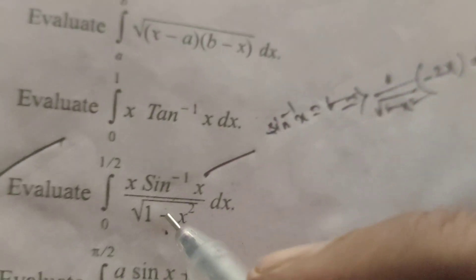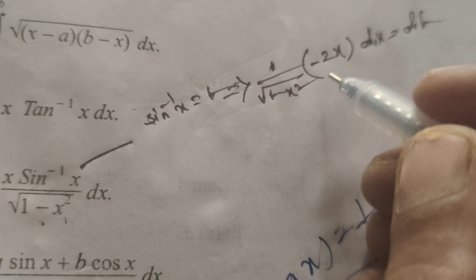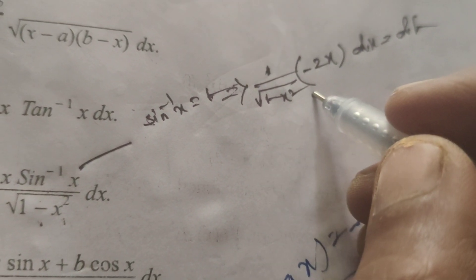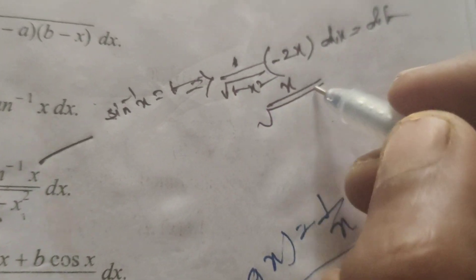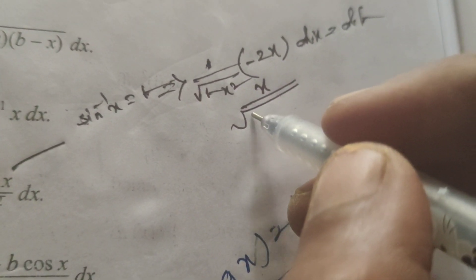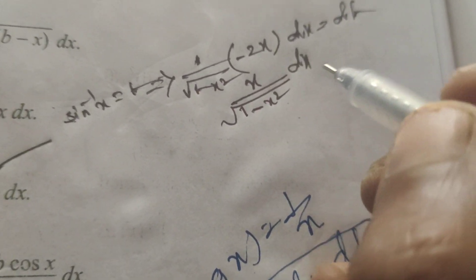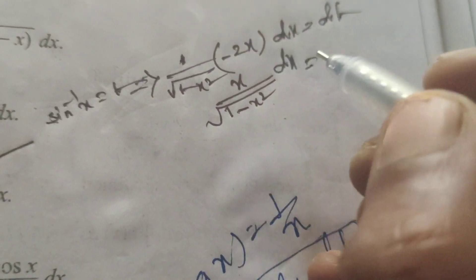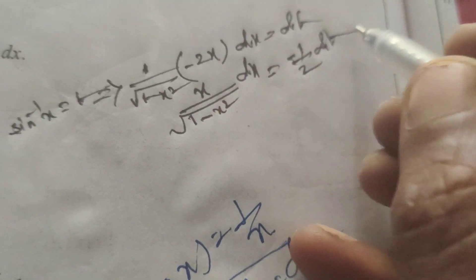By the given problem, x by root of 1 minus x square dx equals this multiplied by minus 2. Here I write the denominator into dt.